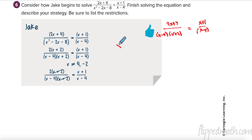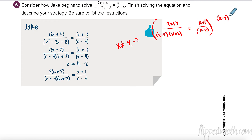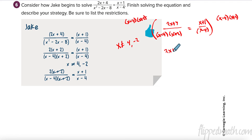x cannot equal 4 and negative 2. To get rid of x minus 4 I multiply both sides by x minus 4, and to get rid of x plus 2 I multiply by x plus 2. On this side I already have an x minus 4, so that cancels and I don't need another one. So x minus 4 cancels, x plus 2 cancels, and I have 2x plus 4 over here. The x minus 4 also cancels there and I have the quantity x plus 1 times the quantity x plus 2.